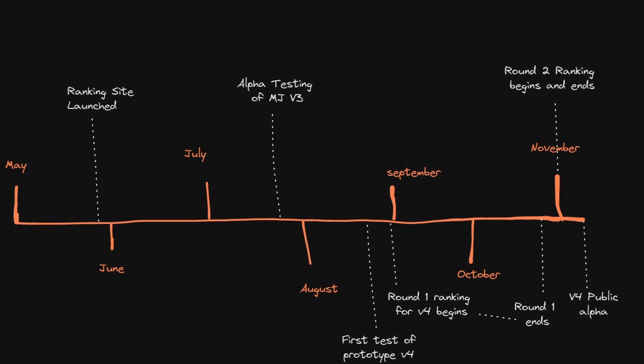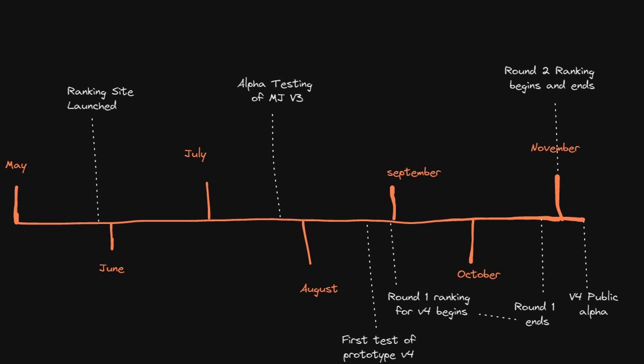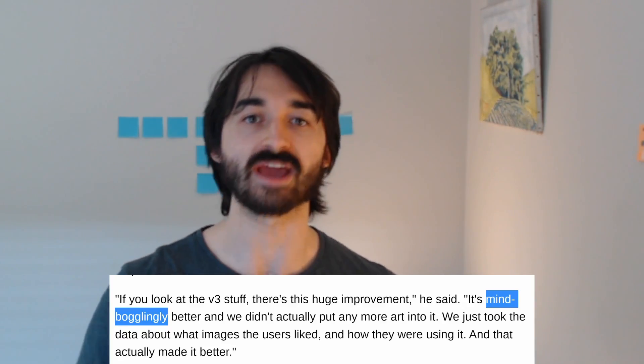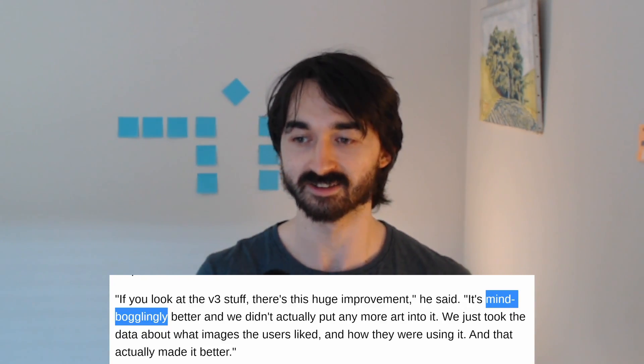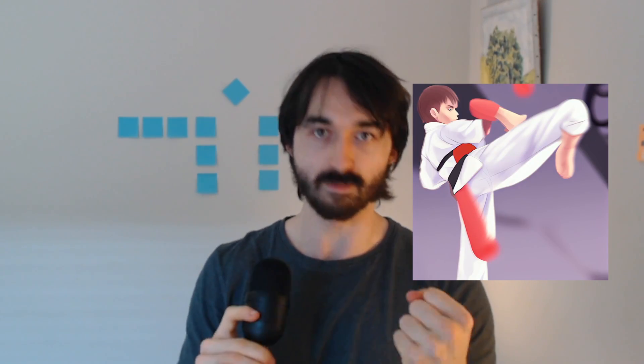So it was probably just user rankings, though the implicit preference of choosing one of four images also seems like it could be helpful. MidJourney did something similar for v4 — during training they had two ranking rounds where people were rewarded for ranking. The first round went for about two months, and the second for about four days near the end. Holst put a lot of weight on the first ranking round for v3, so user feedback is presumably a big part of why MidJourney v4 is so good.